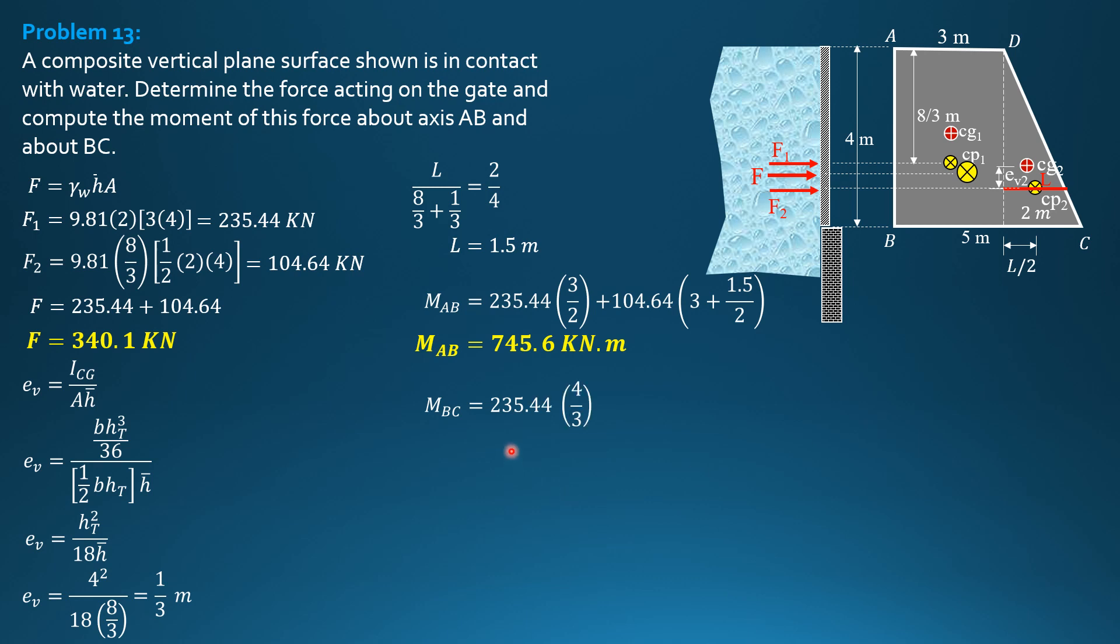So moment about BC is 235.44 times 4/3 plus 104.64 times quantity 4 minus bar H of triangle, which is 8/3, minus EV2. So moment BC is equal to 418.6 kilonewton-meters.